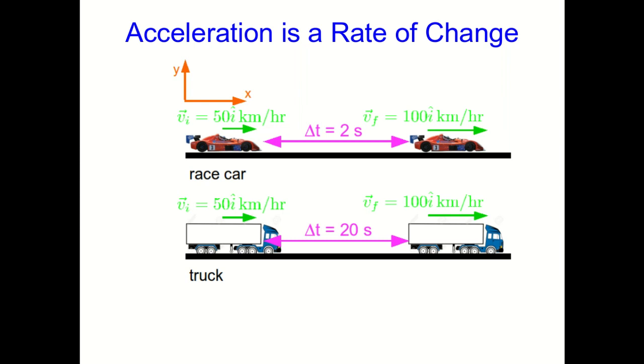So we can now talk about the accelerations. Both of them have changed velocity, and their changes in velocity are the same. Both have changed velocity by 50 kilometers per hour in the positive x direction. But the race car did it in far less time, and so we would say it has a higher rate of change of its velocity. So this is the average x component of the acceleration: the change in the x component of velocity divided by the time it took for that change, and so this is a rate of change.